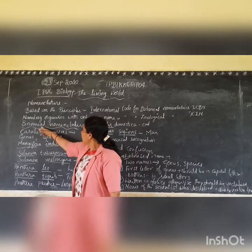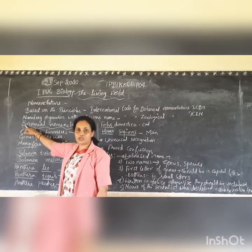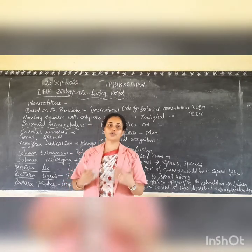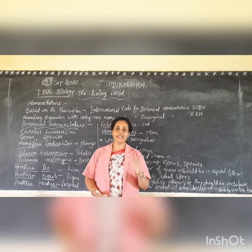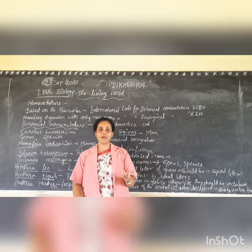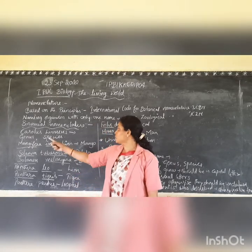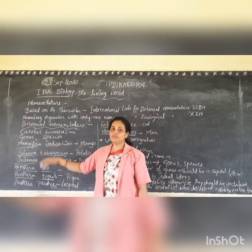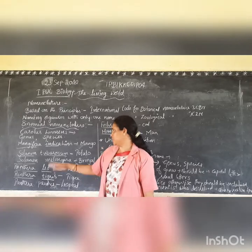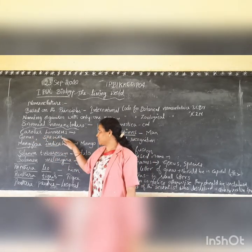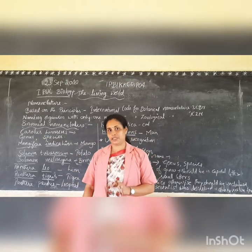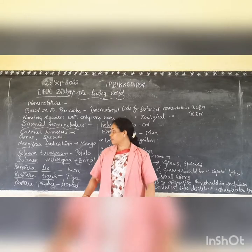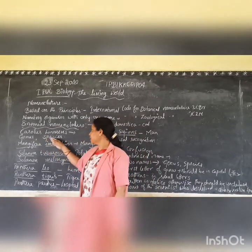Binomial nomenclature is a scientific method of naming organisms with two words or two names. The first name is the name of the genus and the second name is the name of the species. So you can identify the name of genus and name of species — that is nothing but binomial nomenclature.